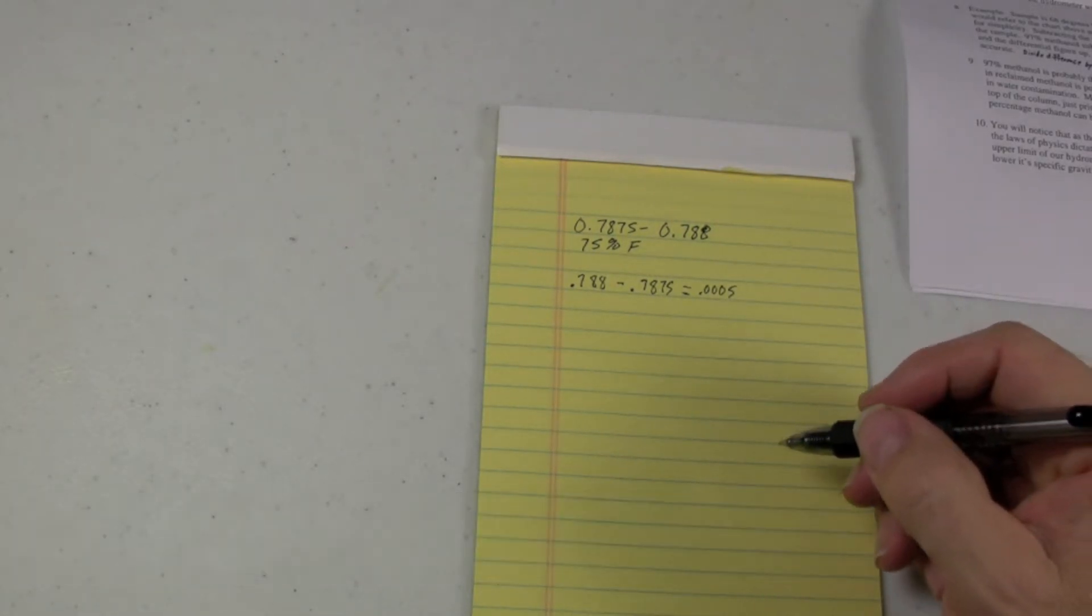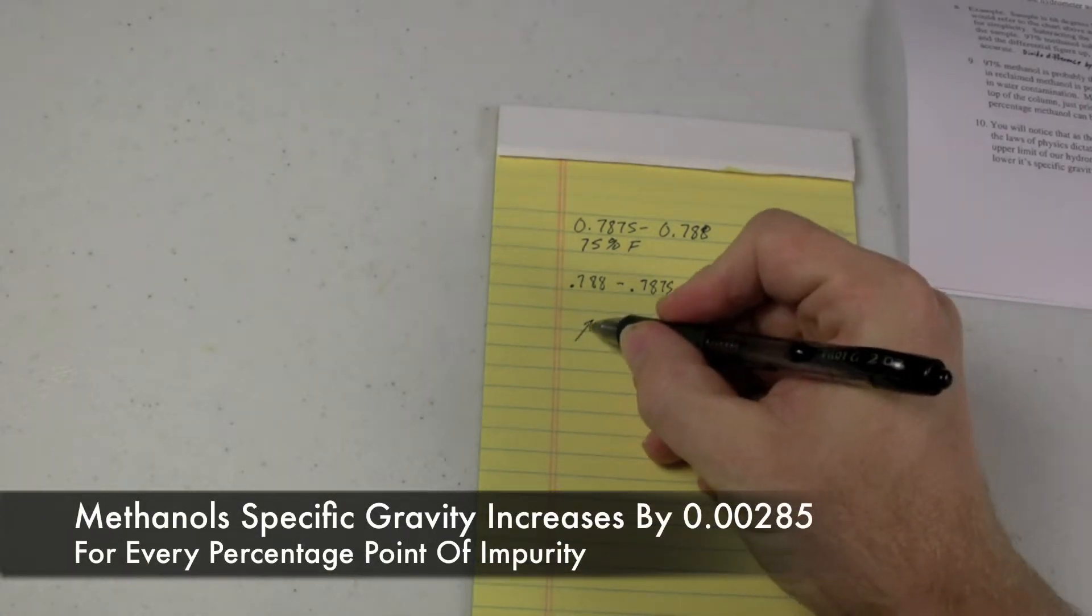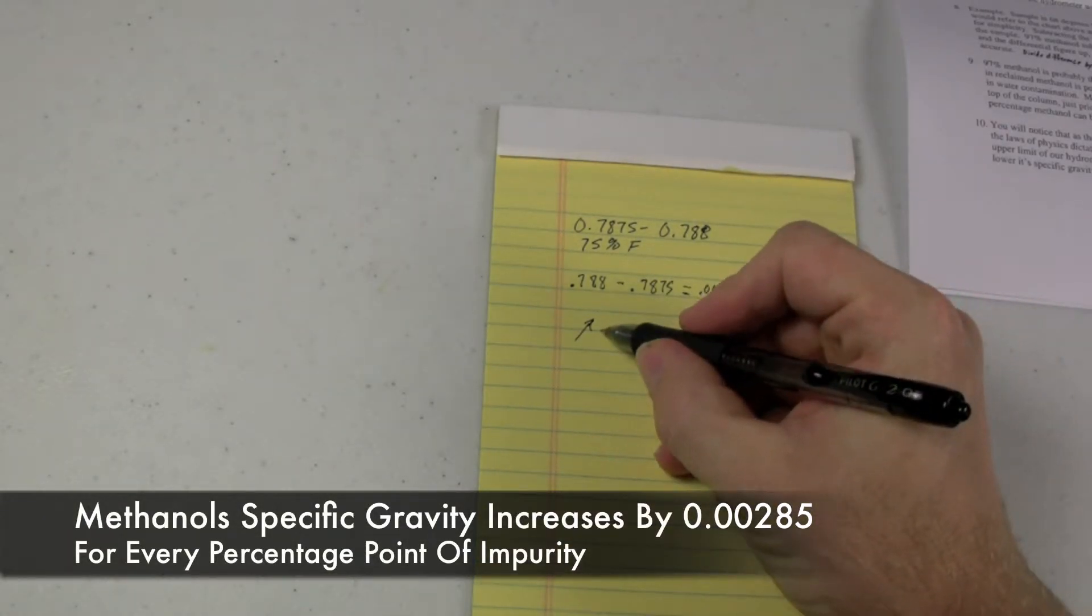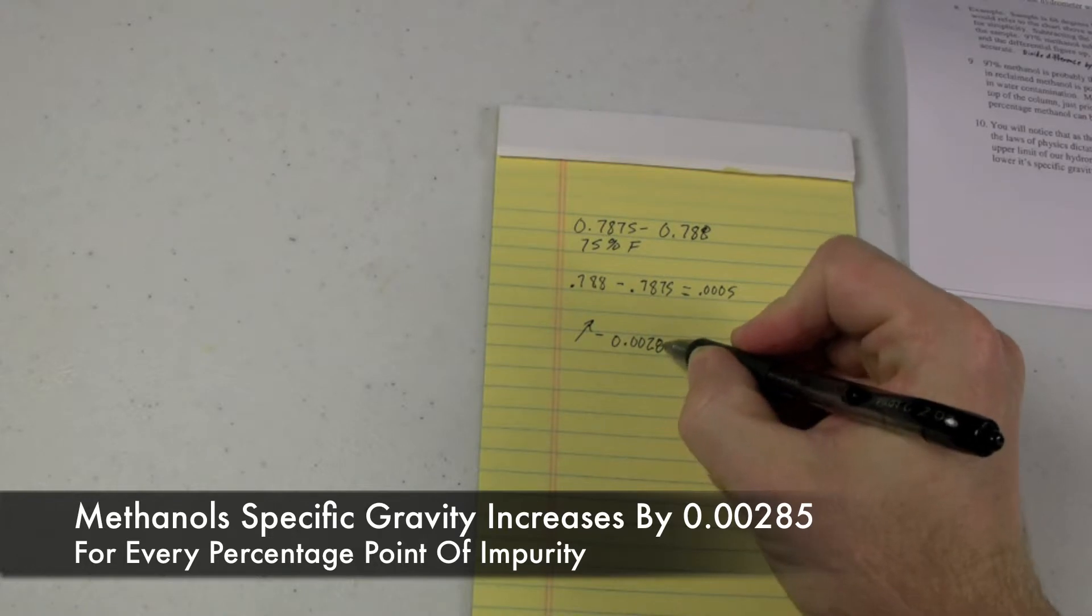Methanol, as it becomes impure, for every percentage point of impurity in methanol, its specific gravity goes up by 0.00285.